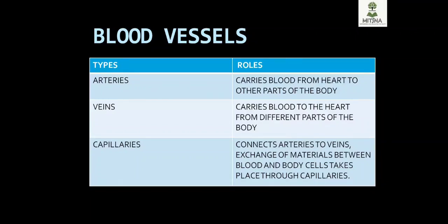Arteries transport blood from the heart to different parts of the body and carry oxygenated blood. All arteries carry oxygenated blood except for pulmonary arteries, which carry deoxygenated blood to the lungs. Pulmonary veins carry oxygenated blood back. Capillaries connect arteries and veins and allow exchange of materials between blood and body cells.